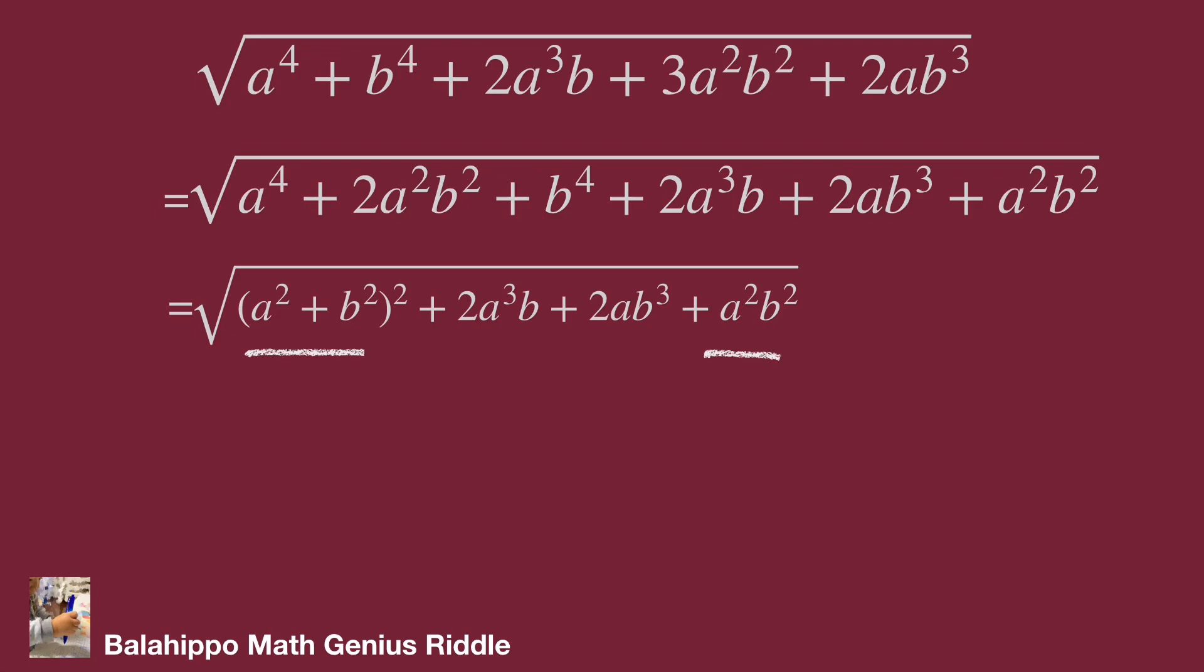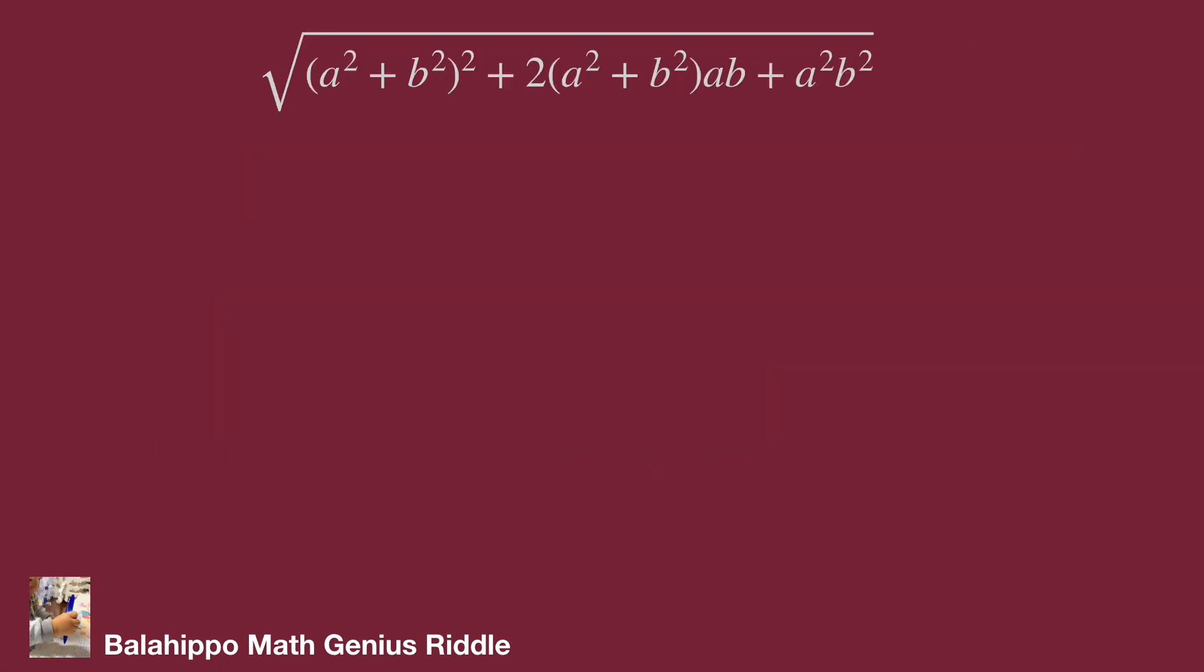Fortunately, we may generate another square with these two items. Adjust the equation as (a^2 + b^2)^2 + 2(a^2 + b^2)(ab) + a^2b^2. It is a perfect square with a^2 + b^2 and ab quantity.